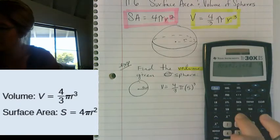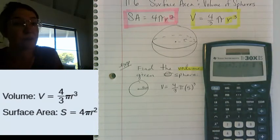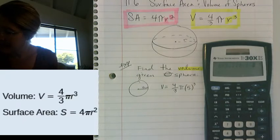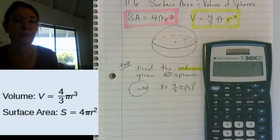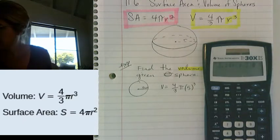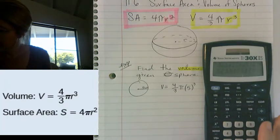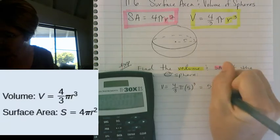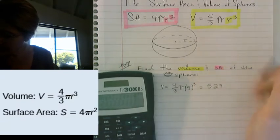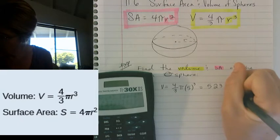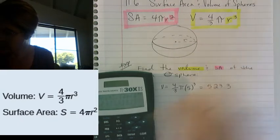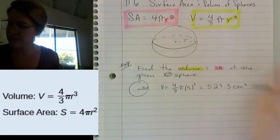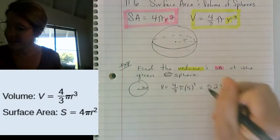And then to times it by that fraction, 4/3, I'm just going to put in parentheses, you have to use the parentheses. If you don't, then you're going to get it wrong. 4 divided by 3, and then close the parentheses. You have to close those parentheses. Alright, and let's press equal, and there we go. So we get 523.3. Our unit was centimeters cubed. And that is it.